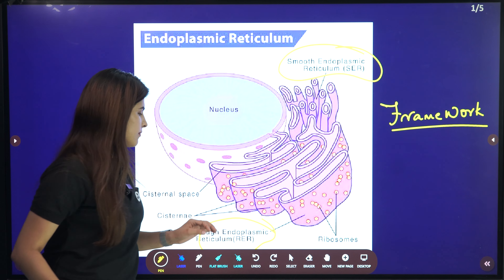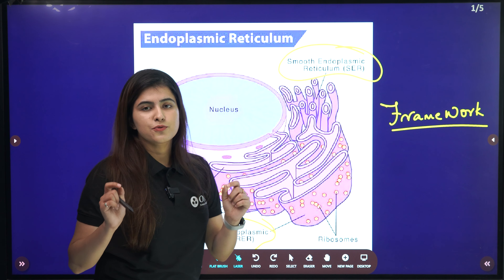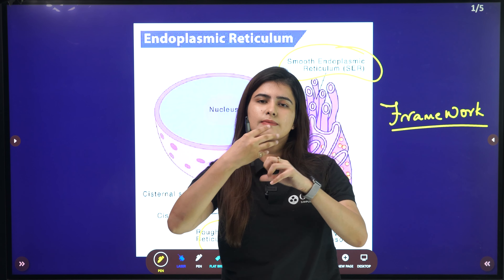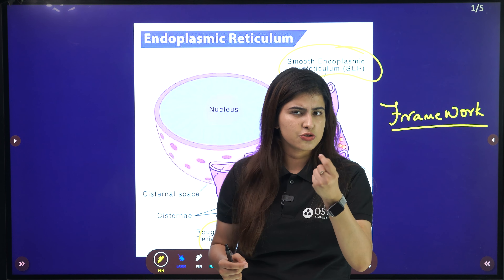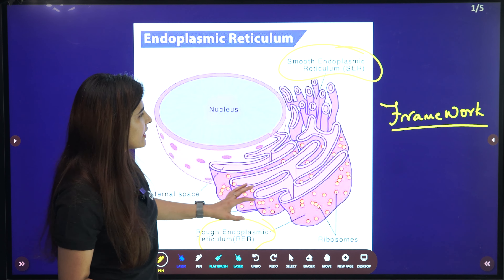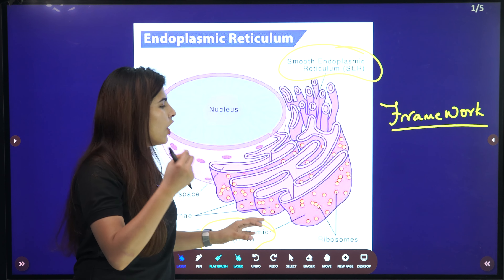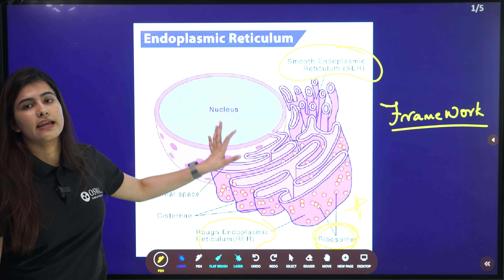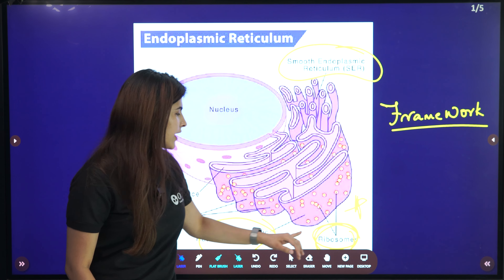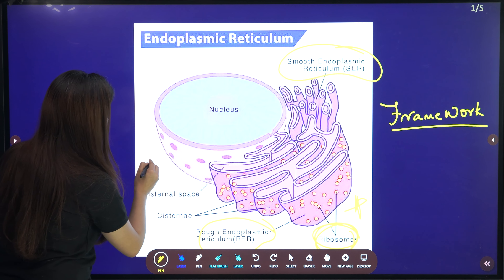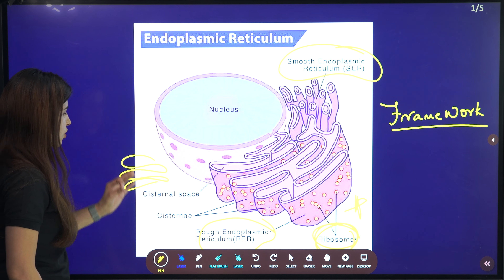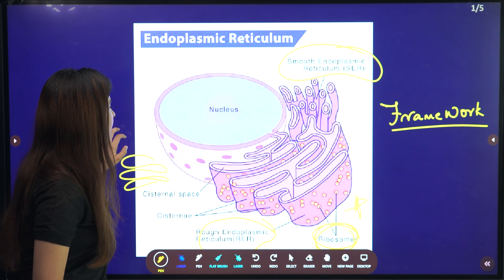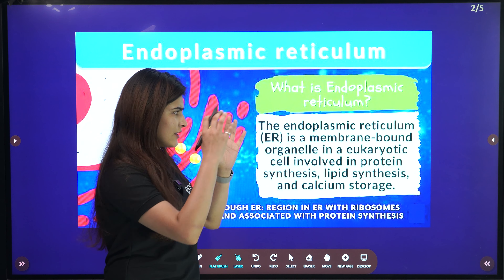One is our smooth endoplasmic reticulum, which we call SER, and one is our rough endoplasmic reticulum, which we call RER. The difference between smooth and rough is like face wash — smooth and soft versus having little granules. Those little granules present on the RER are called ribosomes. This entire diagram is very important. The ER is arranged in patterns called cisterns, and it is arranged around the nucleus.